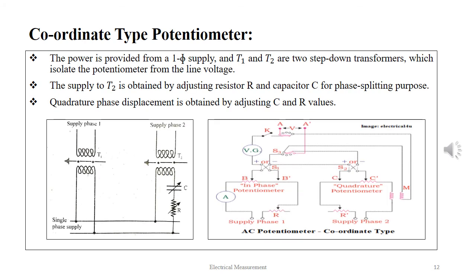The power is provided from a single-phase supply and T1 and T2 are the two step-down transformers which isolate the potentiometer from the line voltage. The supply to T2 is obtained by adjusting resistor R and capacitor C for the phase-spreading purpose. Quadrature phase displacement is obtained by adjusting the C and R values as shown in the figure below.